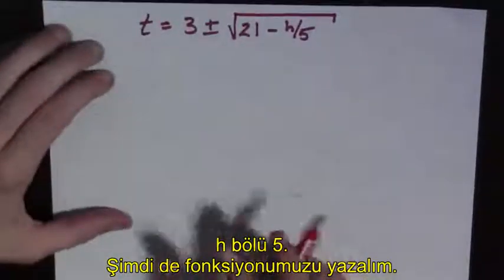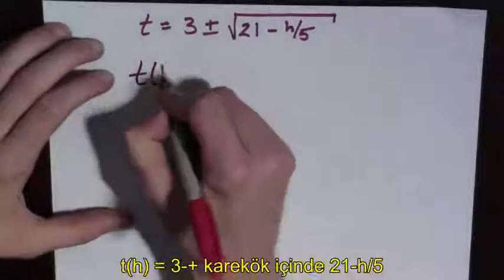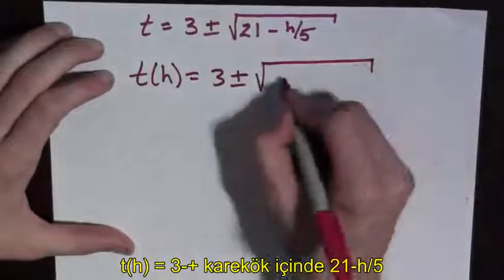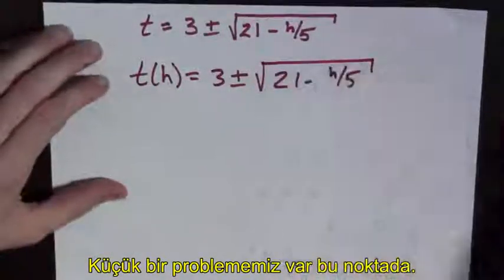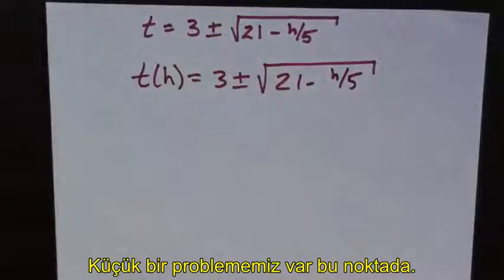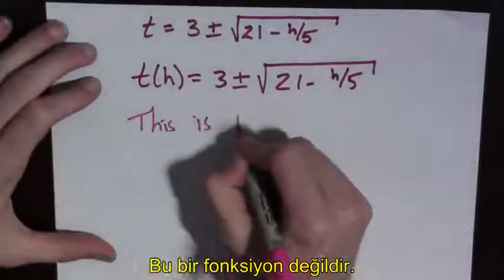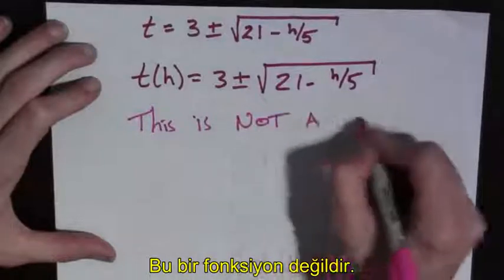At this point, what we want to do is just write t(h) equals 3 plus or minus the square root of 21 minus h over 5 and call it a day. There's only one problem with this. This is not a function.